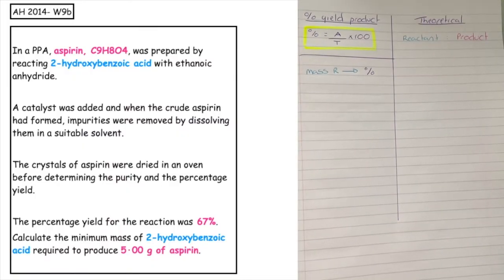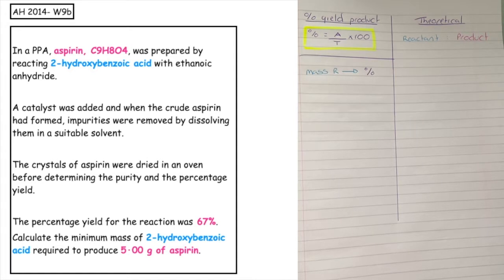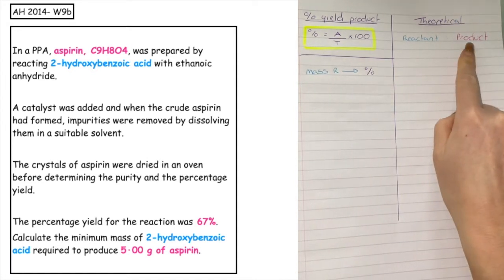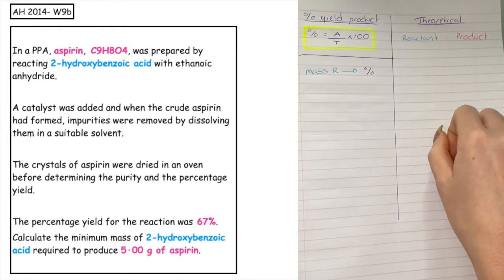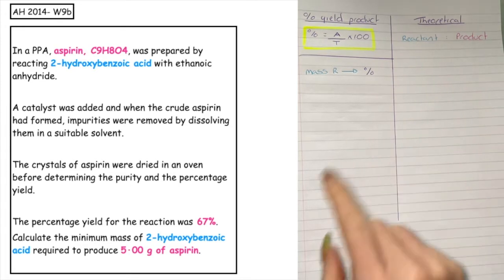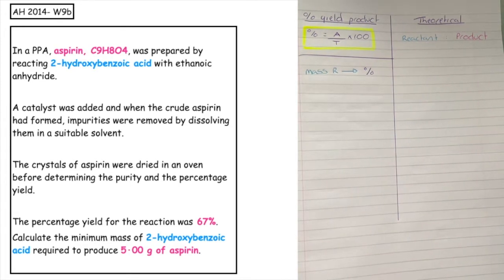This past paper question is from the Advanced Higher 2014 written 9c. In a PPA, aspirin, which is our product with formula C9H8O4, was prepared by reacting 2-hydroxybenzoic acid, which is our reactant, with ethanoic anhydride. A catalyst was added and when the crude aspirin had formed, impurities were removed by dissolving them in a suitable solvent. The crystals of aspirin were then dried in an oven before determining the purity and the percentage yield.